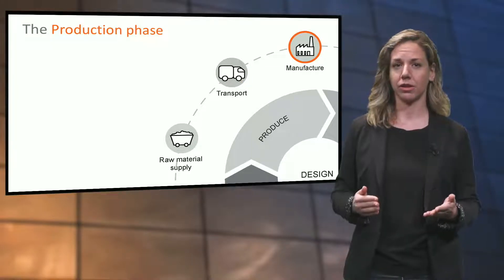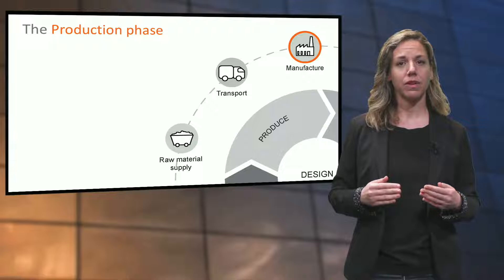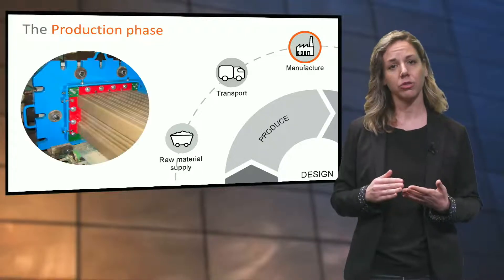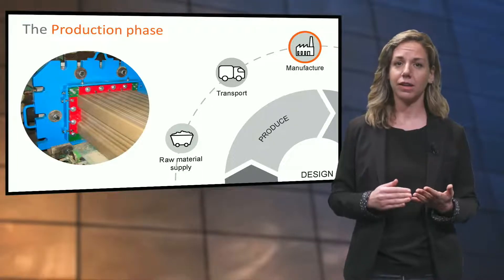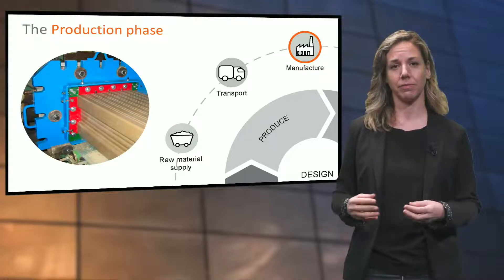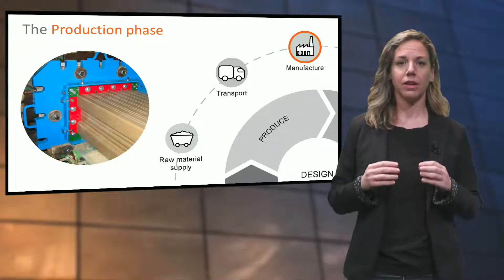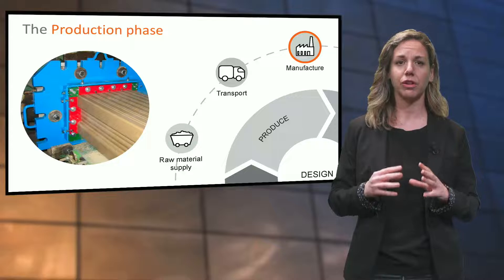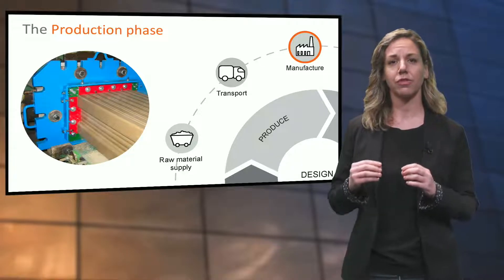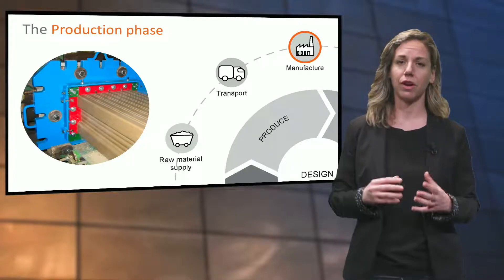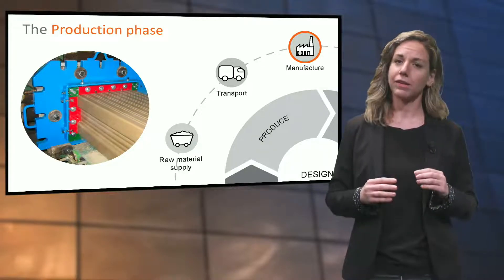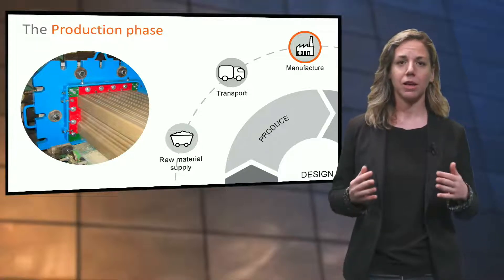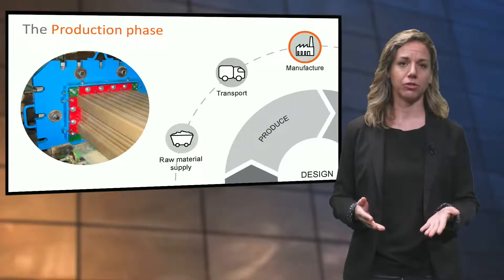The next stage is manufacturing. Brick manufacturing includes making of the clay mixture, forming or extruding the bricks, drying, firing in a kiln and finally packaging. In this production phase, the highest environmental impact occurs during firing and the emissions of burning fossil fuels to fire the oven. The packaging process also has a contribution to the overall environmental impact because of the material and machinery used.